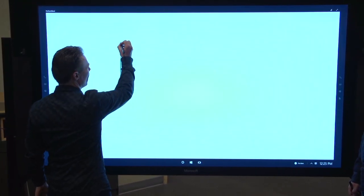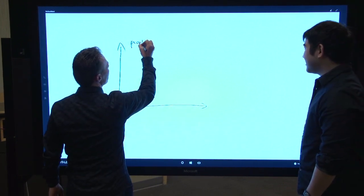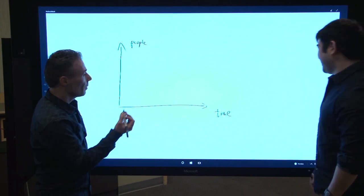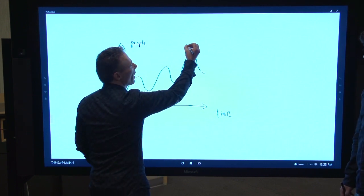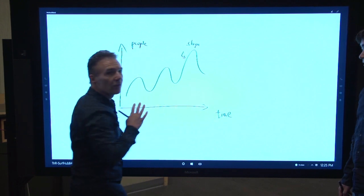So maybe I draw something. And maybe I write like people, and he's writing something. And then maybe I draw a curve, and write slope, and so on.